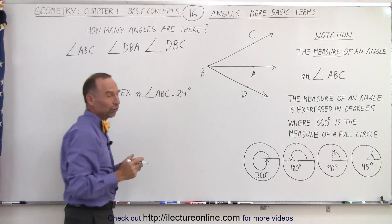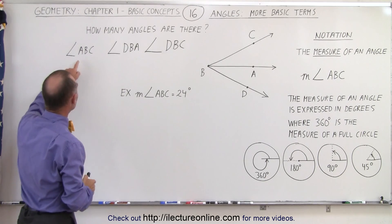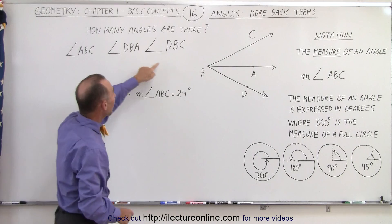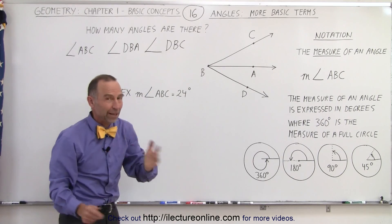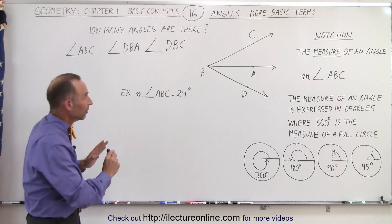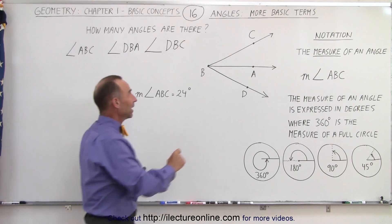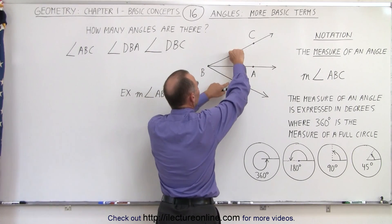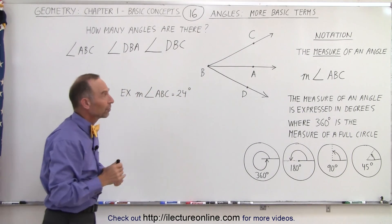Of course, we can reverse the order of these letters. We could have written angle CBA, angle ABD, and angle CBD—the same three angles. So there's only three of them, but we have an angle between those two rays, an angle between those two rays, and an angle between those two rays. So there's a total of three rays.